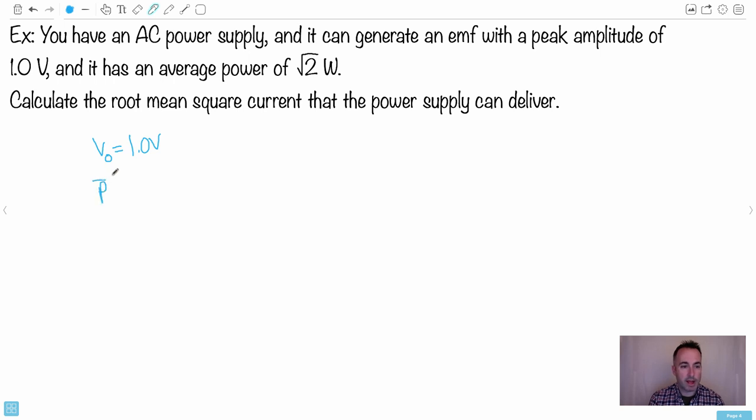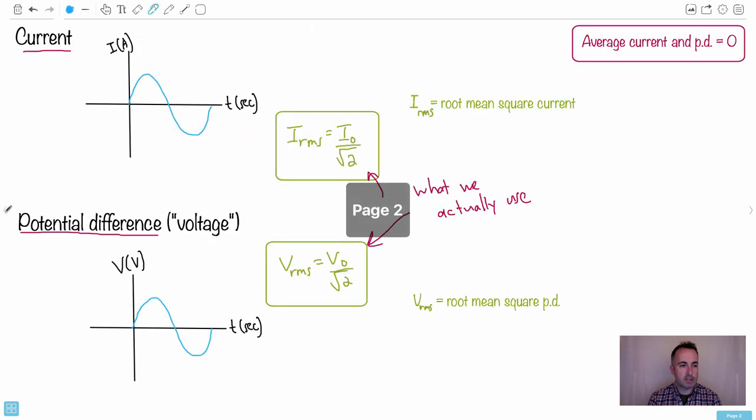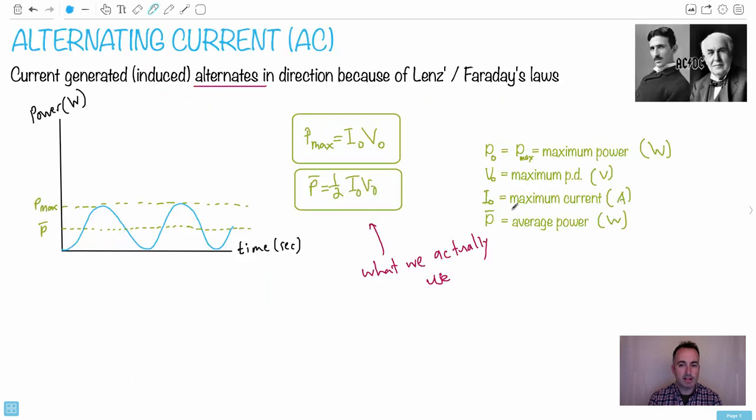What does it mean to have an EMF of a peak amplitude of 1.0 volts? That's your maximum potential difference - that's 1.0 volts. Average power of this is square root of 2 watts. Now we want the root mean square current. So what we want is IRMS. And if you're not sure about alternating current, all you have to do is know a few of those definitions, just like I showed you. You just have to know these different letters, what they mean.